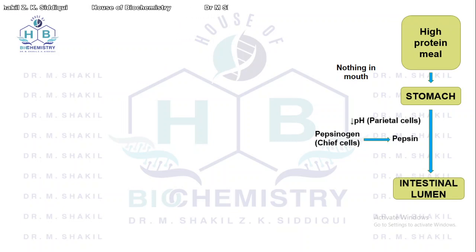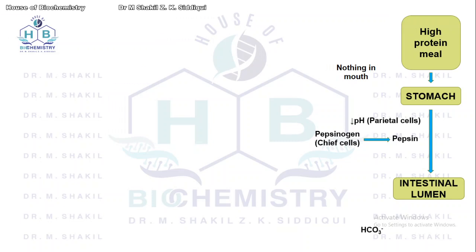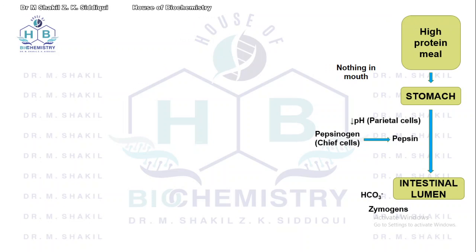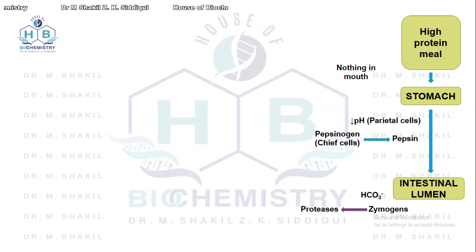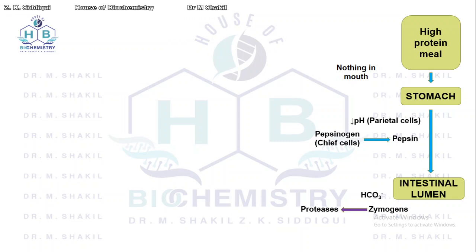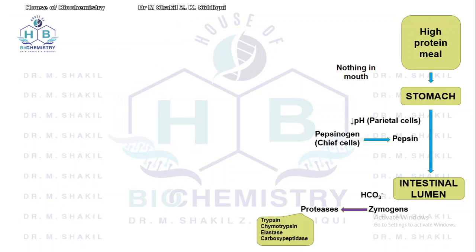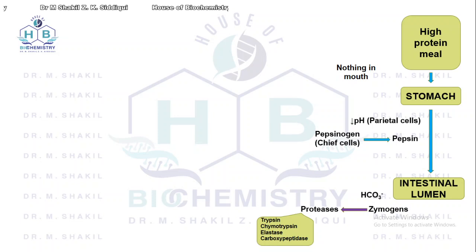The food then enters the intestinal lumen, where bicarbonate is secreted to neutralize the pH, raising it back to around 6.5. The pancreas then gets into action and secretes all the zymogens, which reach the intestinal lumen via the pancreatic duct and are cleaved into active proteases: trypsin, chymotrypsin, elastase, and carboxypeptidase. These are secreted in inactivated form and become activated when they reach the intestinal lumen.